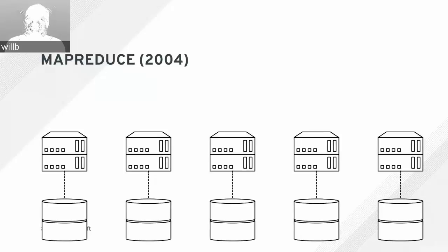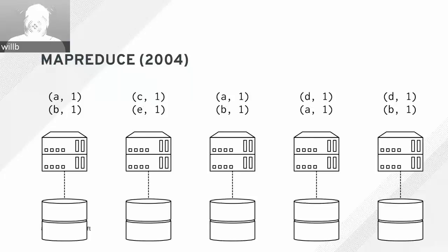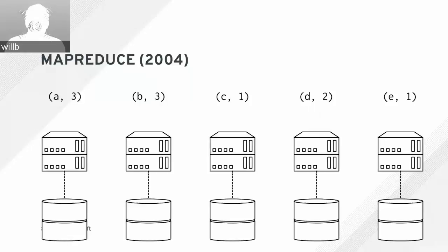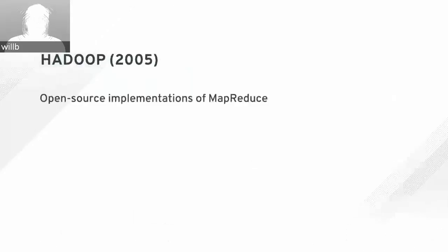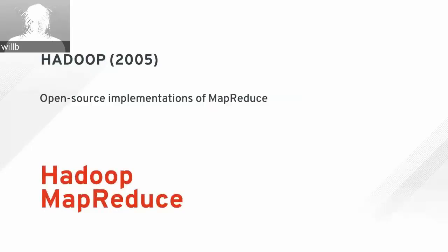Developing distributed applications is hard, but with MapReduce you define three components: a mapper which transforms an individual record of data, a reducer which combines records with a commutative and associative operation, and a shuffle strategy for moving data around the network so related data is local to an individual machine. The framework handles the rest. This was a lot easier than writing distributed applications the old way, and we can solve a lot of problems that scale out naturally.